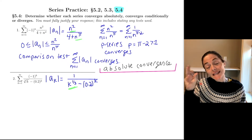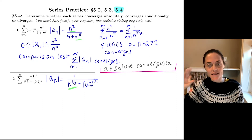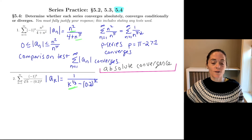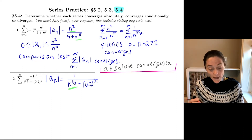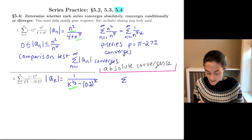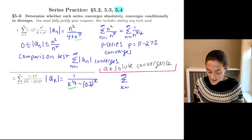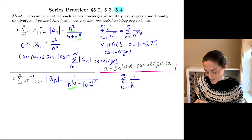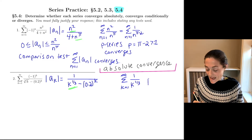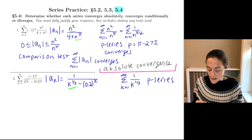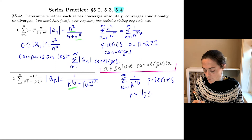If you look at the sum of absolute values of a_k, does it converge or diverge? This very much looks like the p-series from k equals 1 to infinity of 1 over k to the one-third. This is a divergent p-series with p equals 1/3, which is less than or equal to 1, so it diverges.